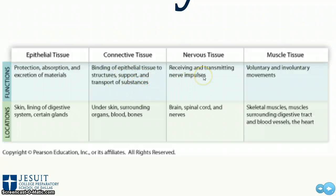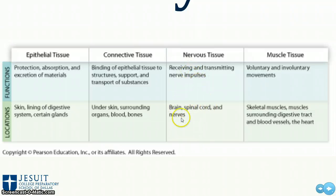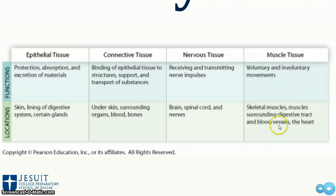Nervous tissues are made up of neurons. These are the things that receive information from the outside world and help process it so we can have some sort of response — this includes your brain, spinal cord, and nerves. Muscle tissue is in charge of actually outputting those responses. These are going to be your skeletal muscles, the muscles surrounding your digestive tract, blood vessels, and also the heart.